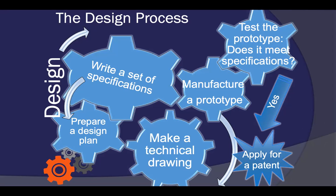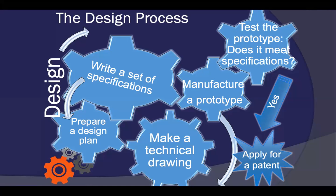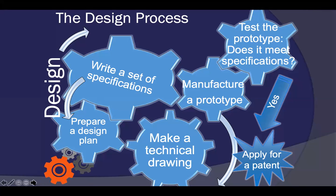We're going to apply for a patent. A patent is a government authority or license conferring a right or title for a set period, especially the sole right to exclude others from making, using, or selling an invention. You want to protect your invention — you made it to fulfill a need, but you also probably want to make some money off of it, or at least prevent someone else from making money off your idea.